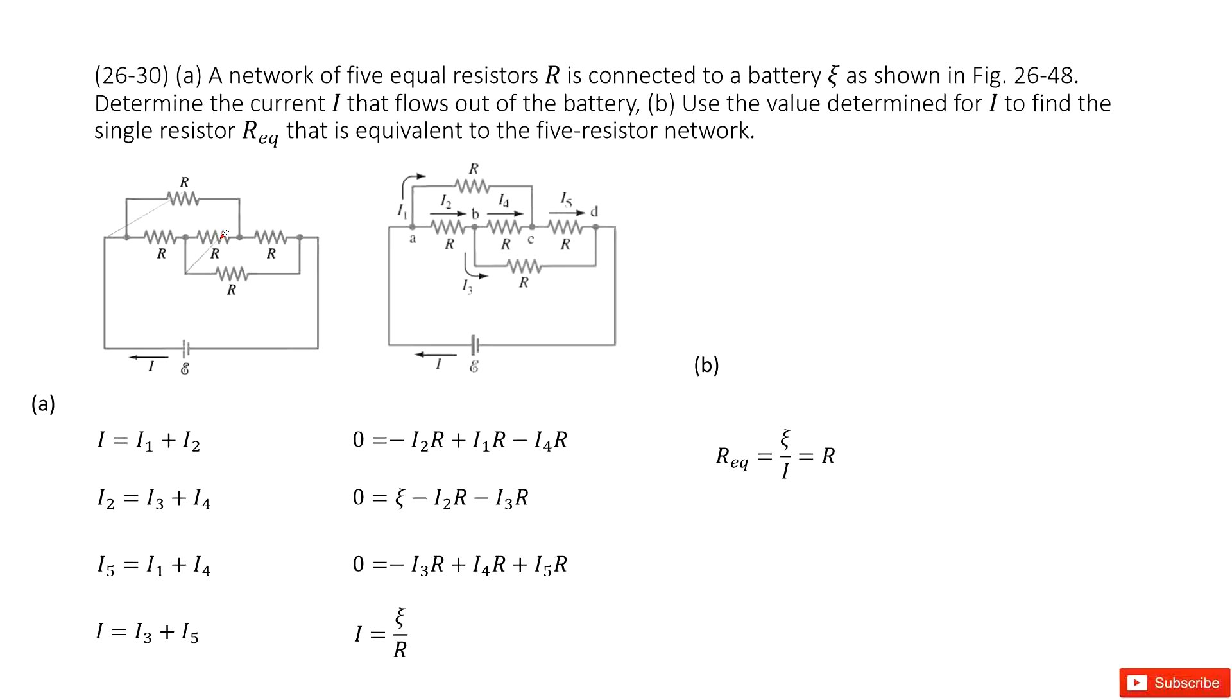See? We can see this point as point A, point B, point C, point D. As the current goes through I1, I2, I3, I4, I5, right?